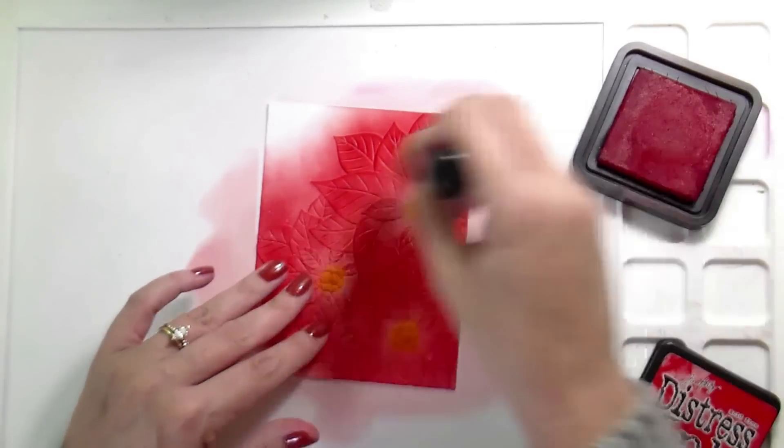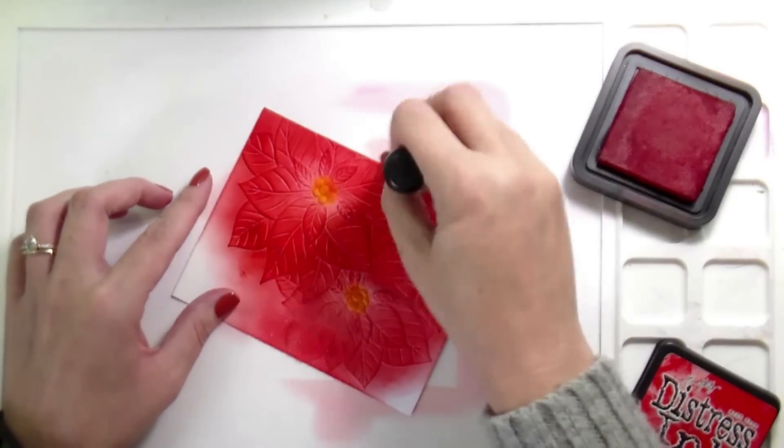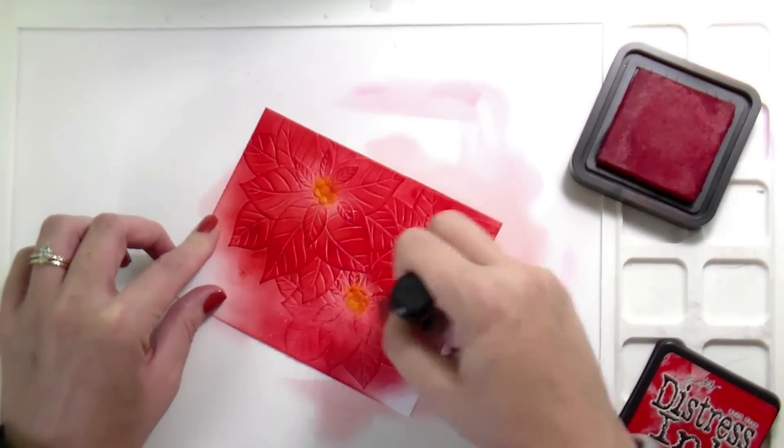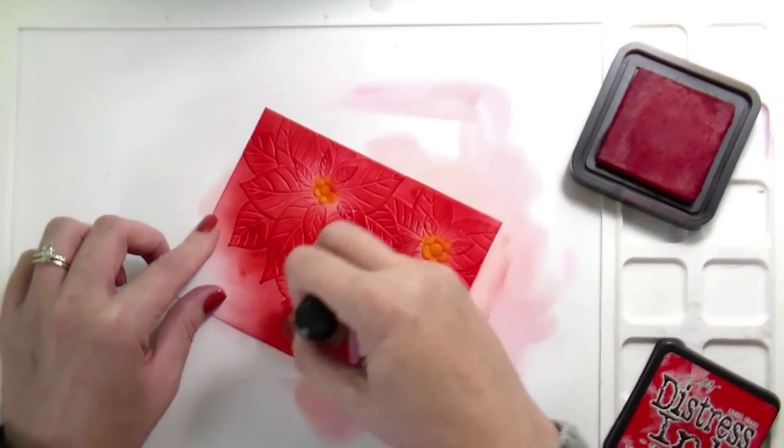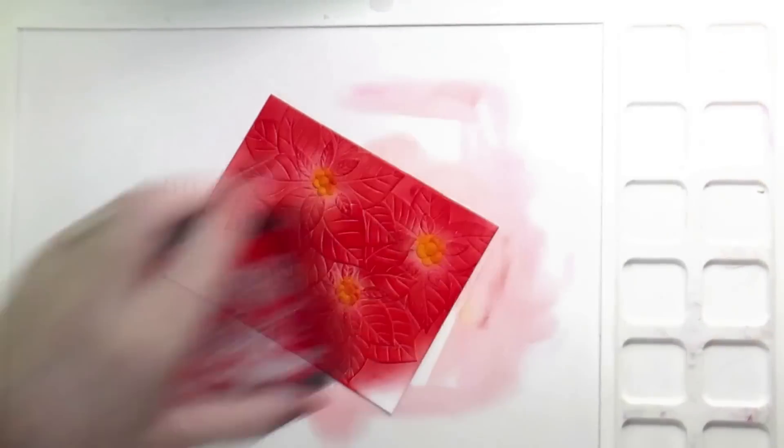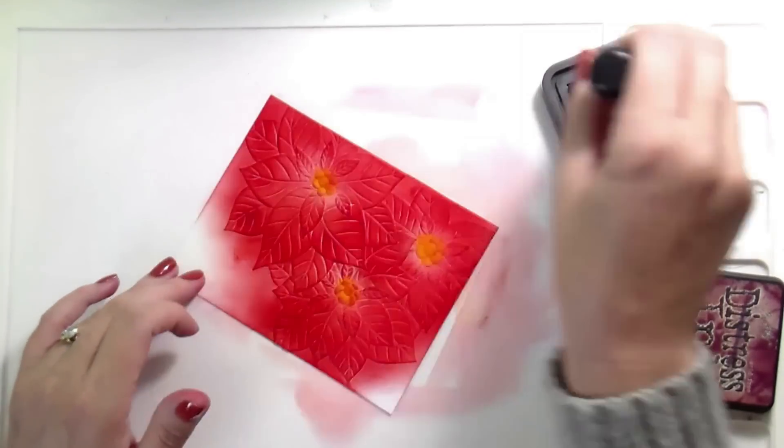So now I'm back to this Candied Apple, and I am just kind of putting on as much ink as I feel is necessary to make them the shade that I want. So you can stop at any point, whenever you're happy. I just really wanted them to be like red red.